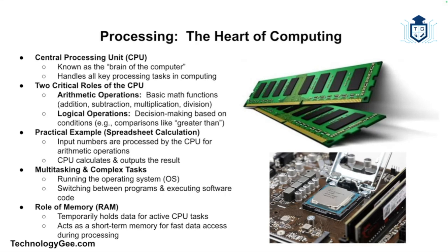Here's how it works in practice. Suppose you're working on a spreadsheet — when you enter numbers and ask the software to calculate a sum, the inputted numbers go through the CPU where the arithmetic operations are processed and the result is calculated. The CPU also handles more complex tasks like running an operating system, multitasking between different programs, and executing code behind web pages or software applications.